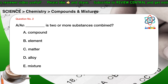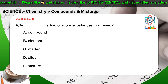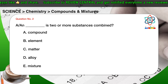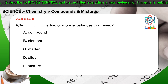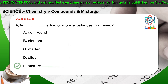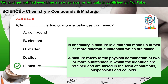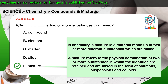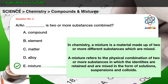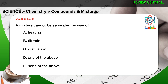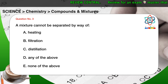Question number two: a blank is two or more substances combined. A) Compound. B) Element. C) Matter. D) Atom. E) Mixture. The correct answer is E. In chemistry, a mixture is a material made up of two or more different substances which are mixed. A mixture refers to the physical combination of two or more substances in which the identities are retained and are mixed in the form of solutions, suspensions, and colloids.